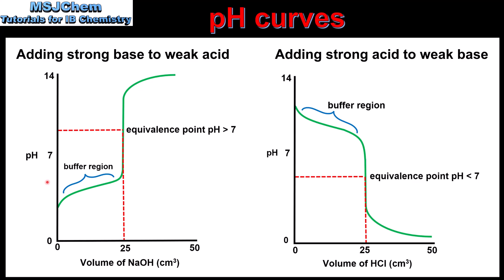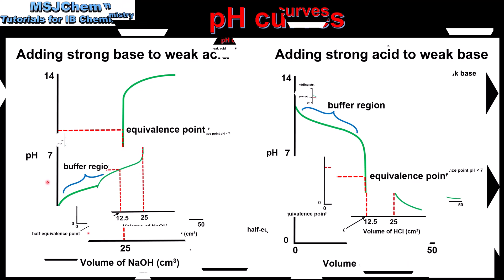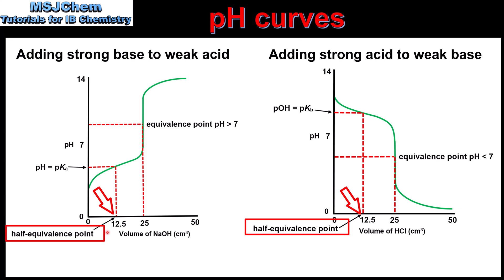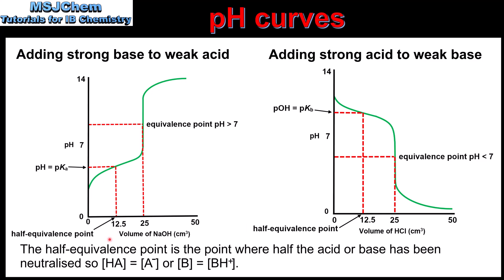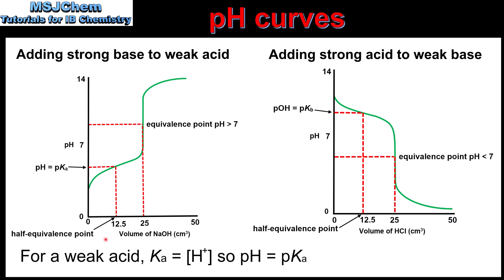Next we look at how to determine the pKa of a weak acid and the pKb of a weak base from these pH curves. On the curves we can see the point labeled the half equivalence point, which is half of the volume of the equivalence point. So if the equivalence point occurs at 25 cm³, the half equivalence point will be at 12.5 cm³. The half equivalence point is where half the weak acid or weak base has been neutralized. At this point the concentration of the weak acid or weak base equals the concentration of its conjugate base or conjugate acid, so Ka equals the concentration of hydrogen ions. Taking the negative log of both gives pH equals pKa.